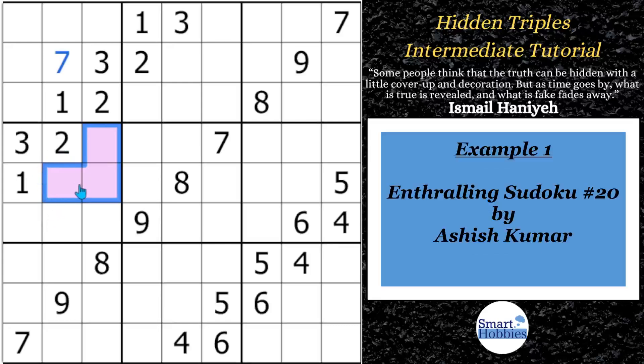Okay, our first example is from Enthralling Sudoku number 20 by Ashish Kumar. What you'll notice is we're trying to figure out where we can put a 7 in this block. Well, we solve for a 7 up here in column 2, and you have the 7 in column 1, and you have this 7 here in row 4. So there could be two possibilities for this 7.